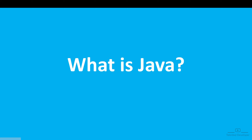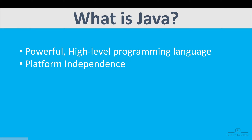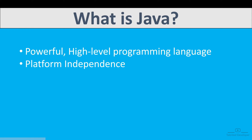So what exactly is Java? Java is a powerful high level programming language that is used to develop a wide range of applications. From simple desktop programs to complex enterprise systems, you can develop any kind of application.